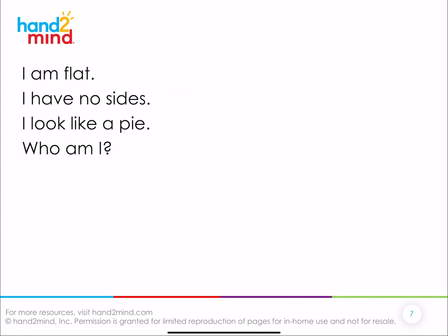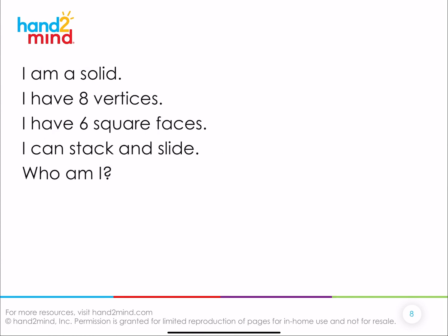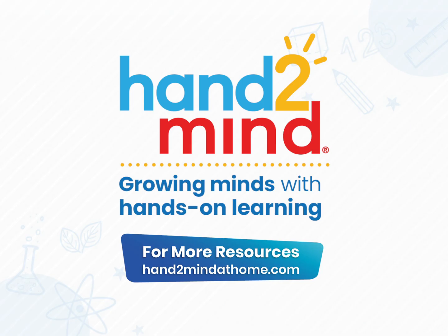Here's the next one: I am flat. I have no sides. I look like a pie. Who am I? I'm a circle — a circle is flat, it doesn't have any sides, and it does kind of look like a pie. Next: I am a solid. I have eight vertices. I have six square faces. I can stack and slide. Who am I? Did you say cube? Yes, I'm a cube. I can stack more cubes on top, I can slide it side to side. I have four vertices on top and four on the bottom, and I have six square faces.